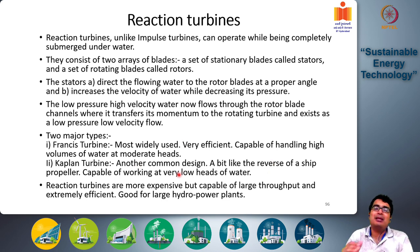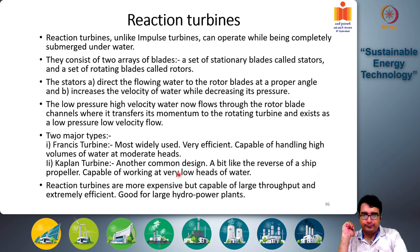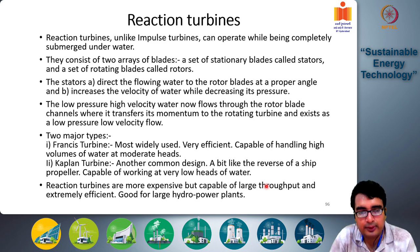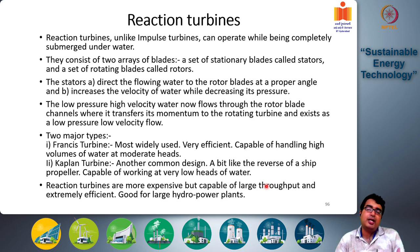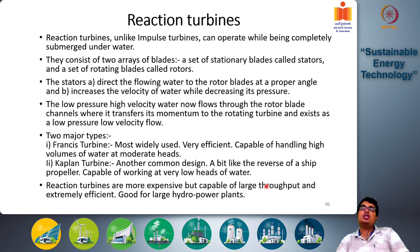The advantage of the Kaplan turbine is that it is capable of working at very low heads of water. If you have a river where the inclination is very slight, the water head is quite low, but there is a large volume of flow, the Kaplan turbine is ideal for such conditions. Reaction turbines are more expensive in general, but they are capable of handling large throughput and are extremely efficient, with very small frictional losses compared to Pelton turbines, making them best suited for large hydropower plants.